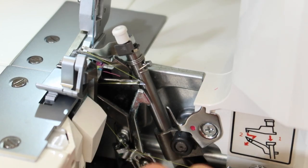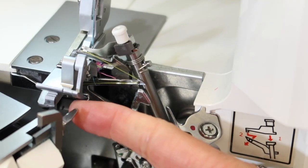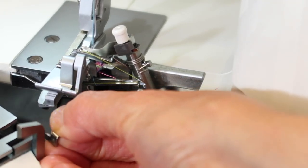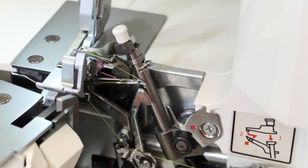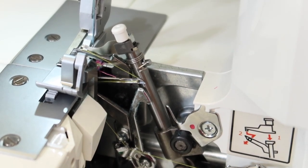If you want to do it as a rolled hem, you're going to go ahead and take out the stitch finger. Let's just go ahead and do that. I'm going to just slide that out. Now it's actually going to be a two thread rolled hem.